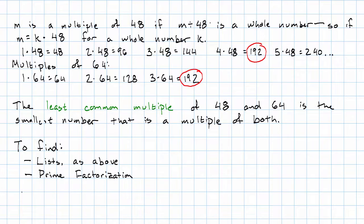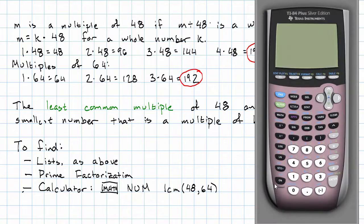Or finally, we could use the calculator. We go to the calculator. We hit the math button. We go over to num, scroll down until we get to the LCM command, enter the first number, a comma, the second number, close parentheses, enter, we get 192.